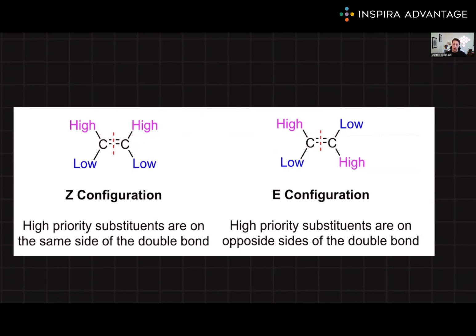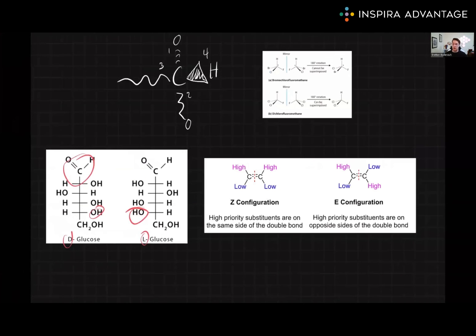In the E configuration, the two highest priority substituents on each carbon of the double bond are on opposite sides of the bond, while in the Z configuration, these substituents are on the same side. Understanding Fisher projections and E/Z nomenclature is vital for accurately representing and interpreting molecular structures and stereochemistry in organic chemistry, especially when it comes to carbohydrates.